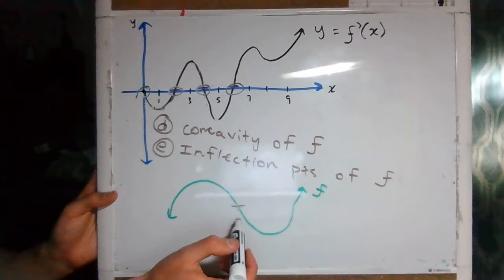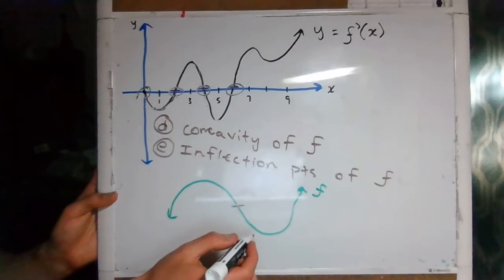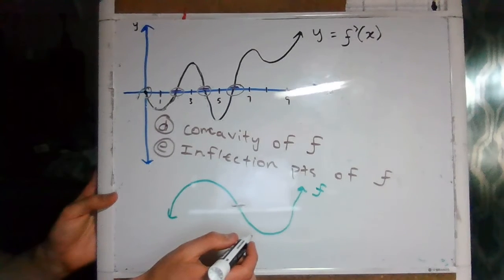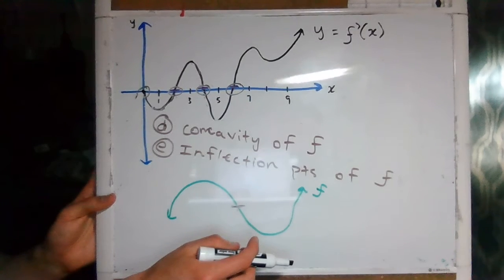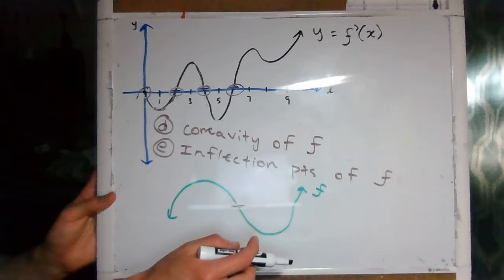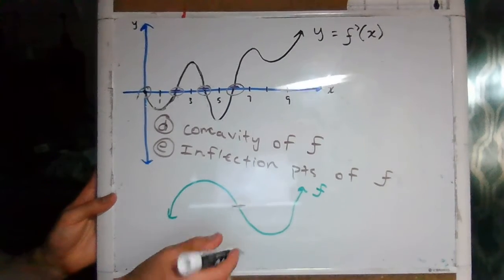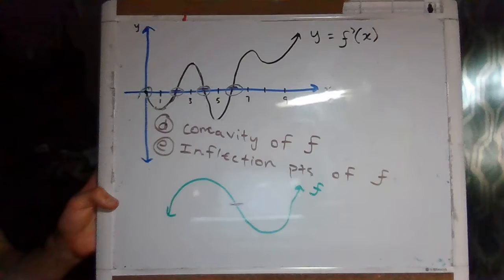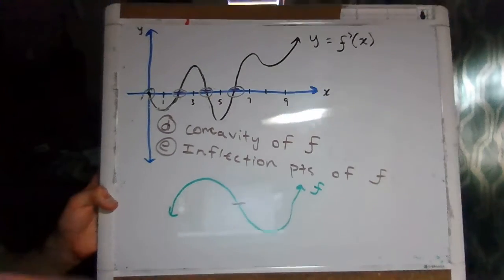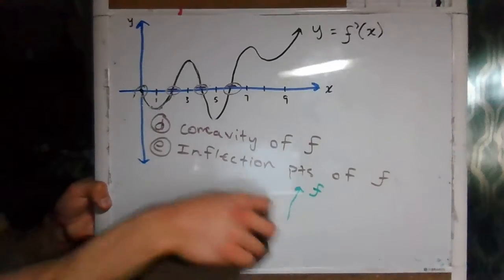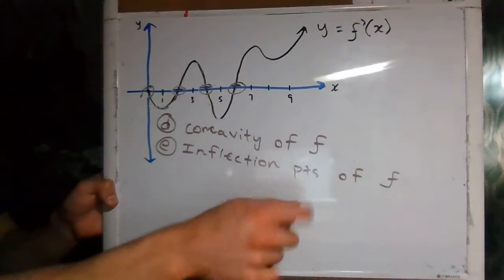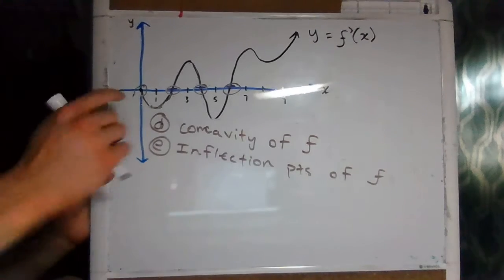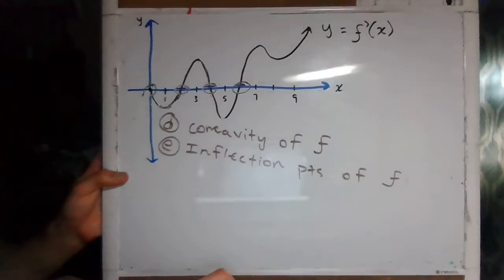From here to here that's concave down, and from here onward that's concave up. The second derivative is probably the easiest way to give you information about concavity of f. We're only given a picture of the first derivative so we're going to use that. Much like how the first derivative can tell you about intervals of increasing or decreasing, minimums and maximums — all that information about the original function f — the second derivative can do the same thing: it can tell you all that information about concavity and inflection points.